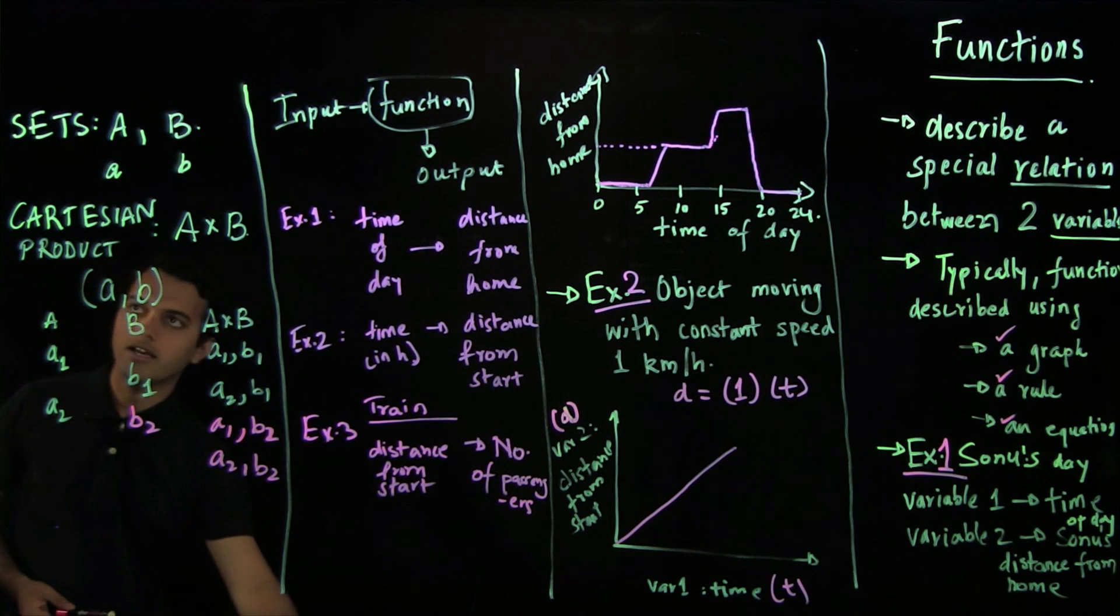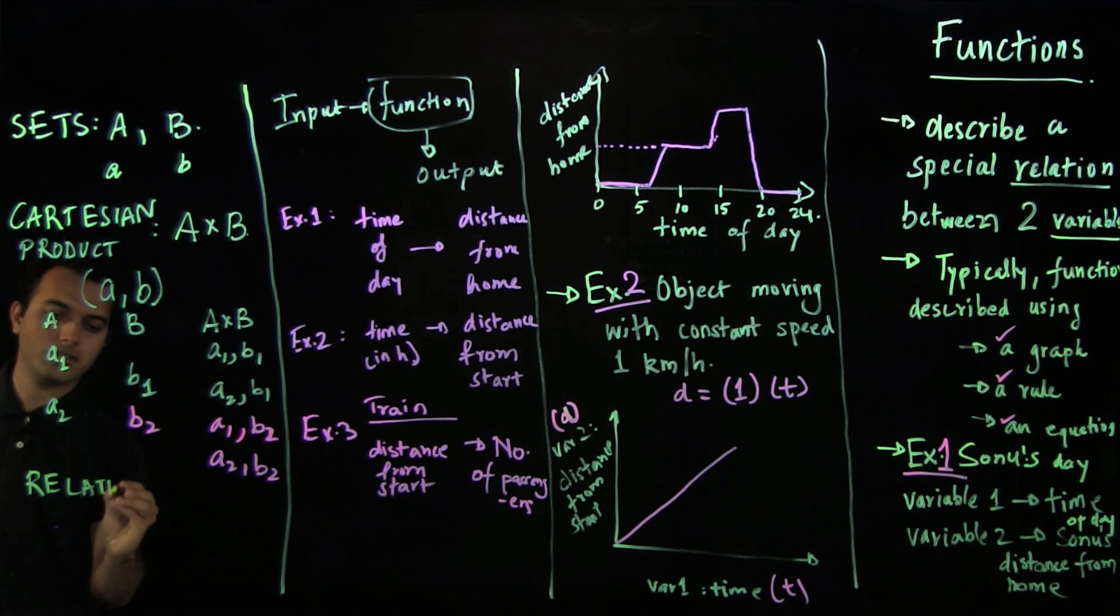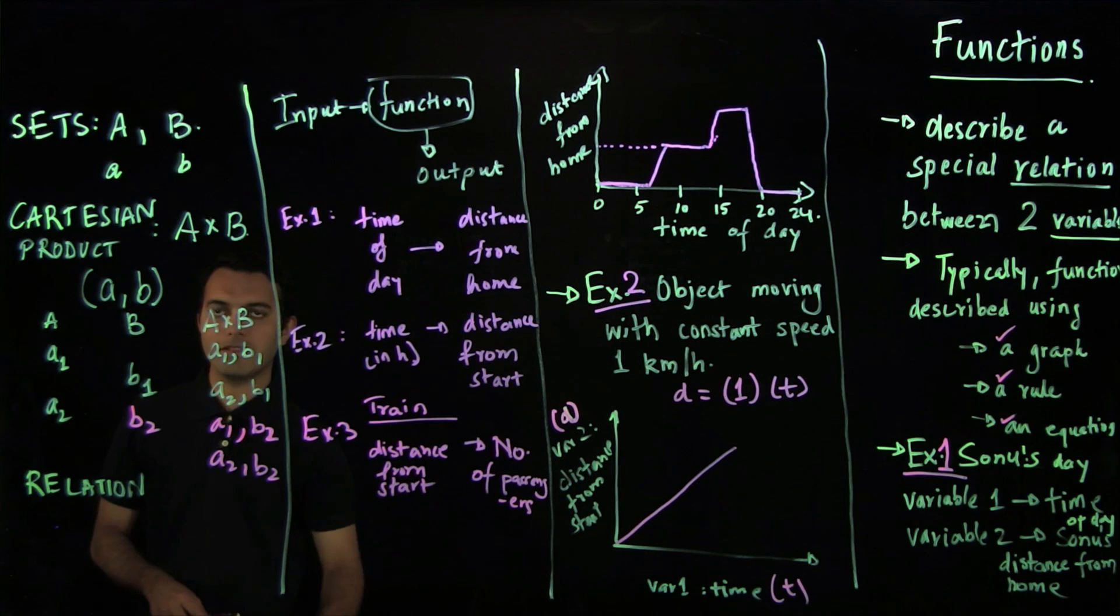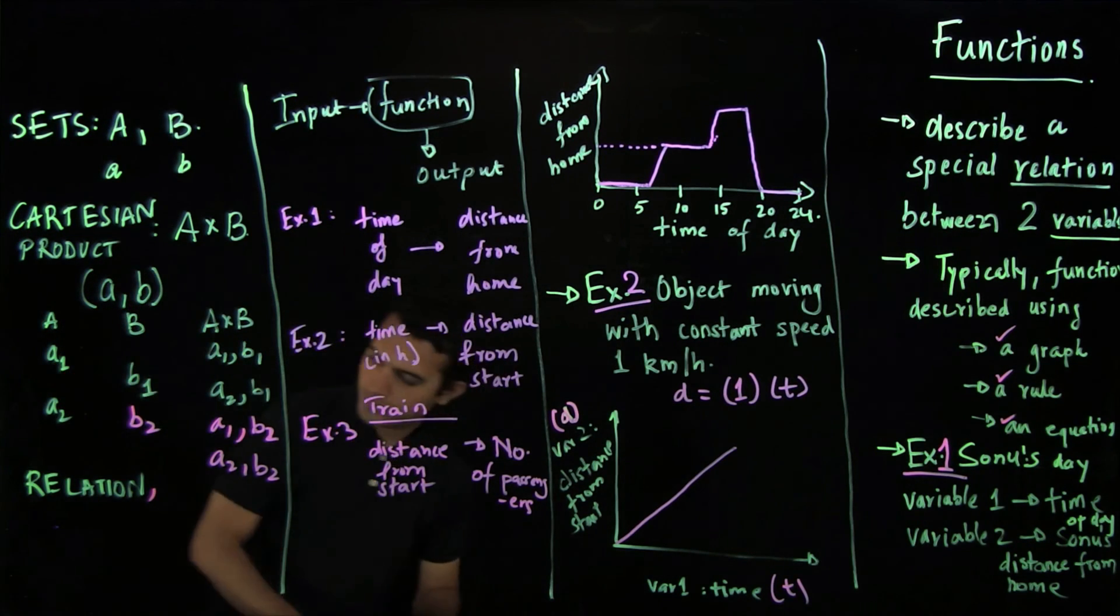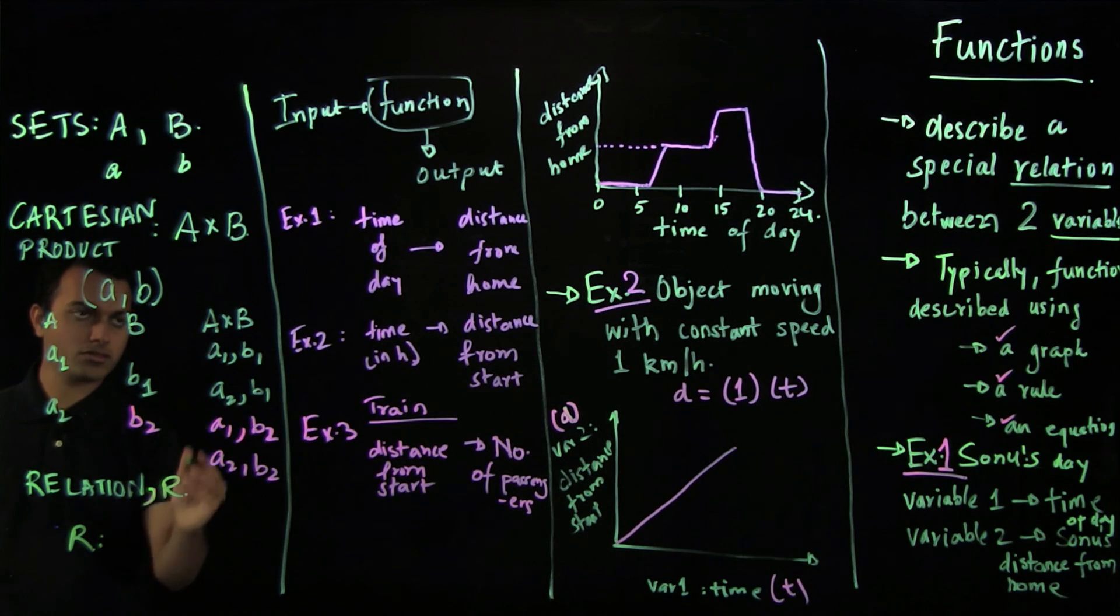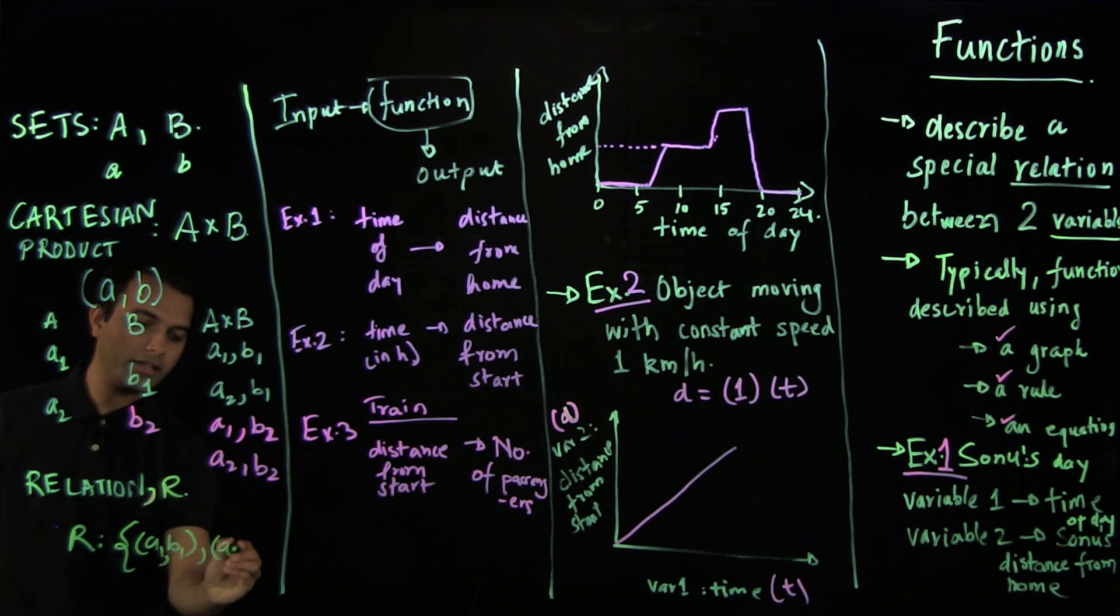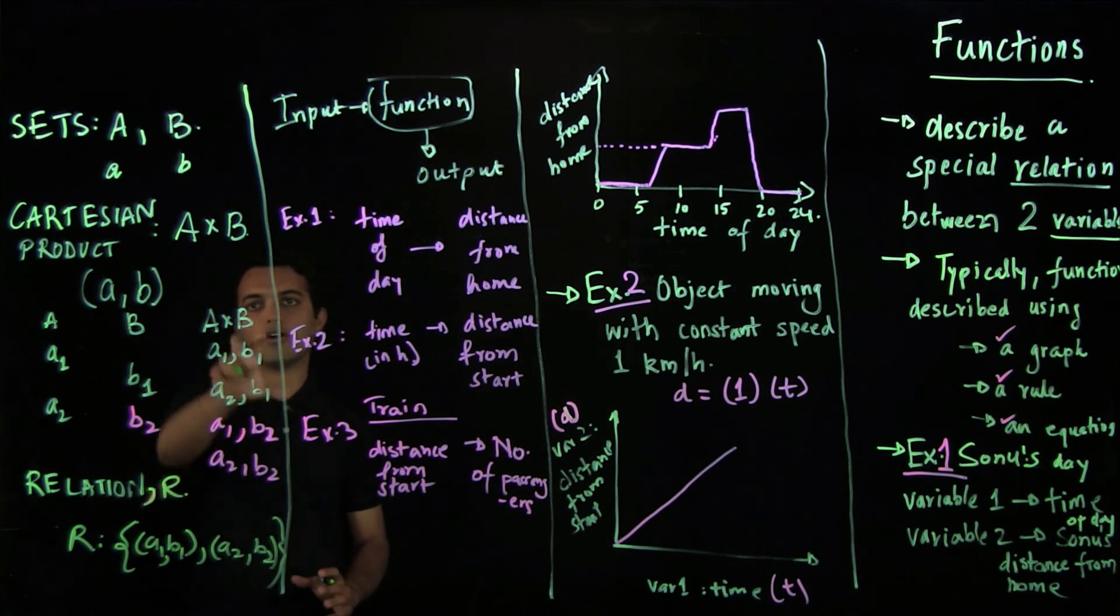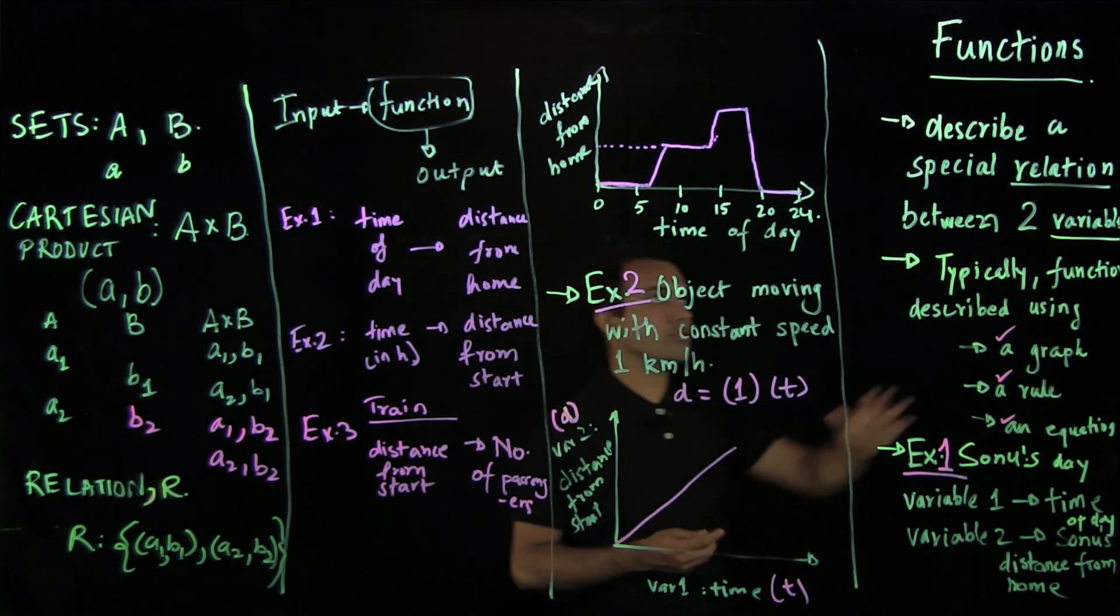One construct is a cartesian product of two sets. A cartesian product of two sets A, B is given by A cross B and includes all the elements a comma b. So let's say if set A has two variables, let's say a1 and a2, and set B has one variable b1, then A cross B will have two variables. But if set B had another variable b2, then there will be four variables: a1 comma b1, a1 comma b2, a2 comma b1, and a2 comma b2.